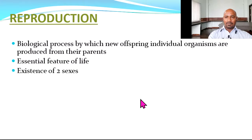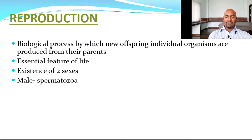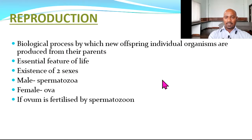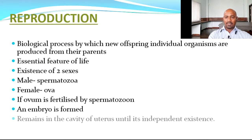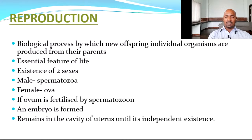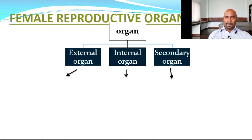Continuation of the species depends on the ability of that species to reproduce. In many mammals there are two sexes — male and female — responsible for contributing equally to the genetic material for the offspring. Males produce spermatozoa and females produce ovum. The ovum is fertilized by spermatozoa and an embryo is formed which remains in the cavity of the uterus until independent existence is possible after birth. This is specific to mammals.